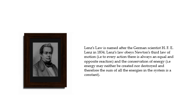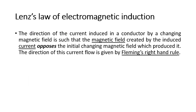This law represents these two principles and was given by the scientist Lenz. We have discussed that current is induced due to a magnetic field, as covered in the previous lecture. Now, the question is the direction of current. The direction of current induced in a conductor by a changing magnetic field is such that the magnetic field created by the induced current opposes the initial changing magnetic field.